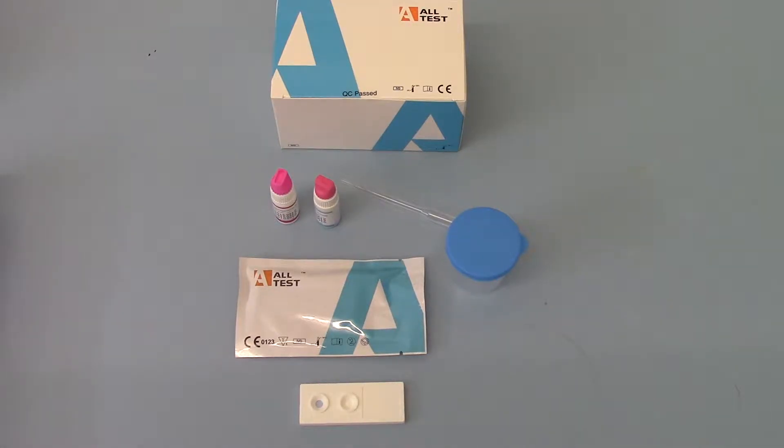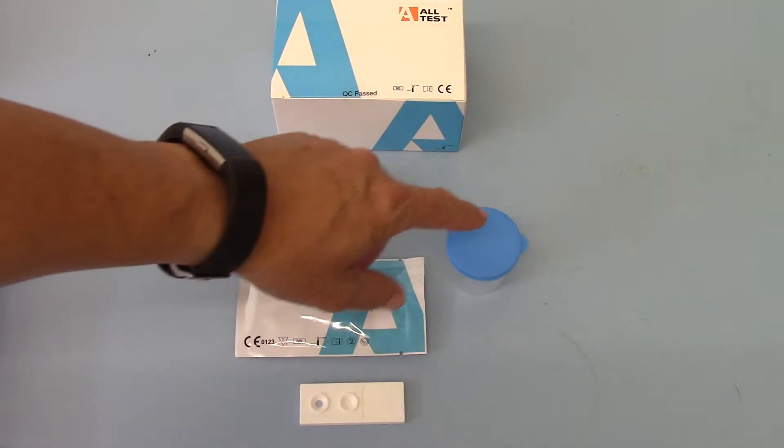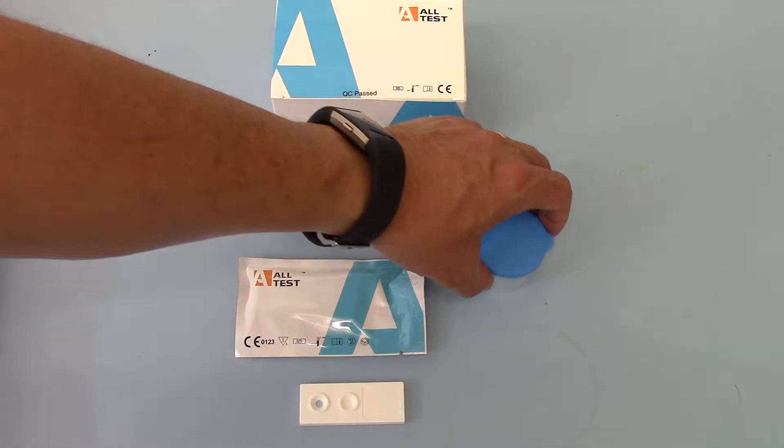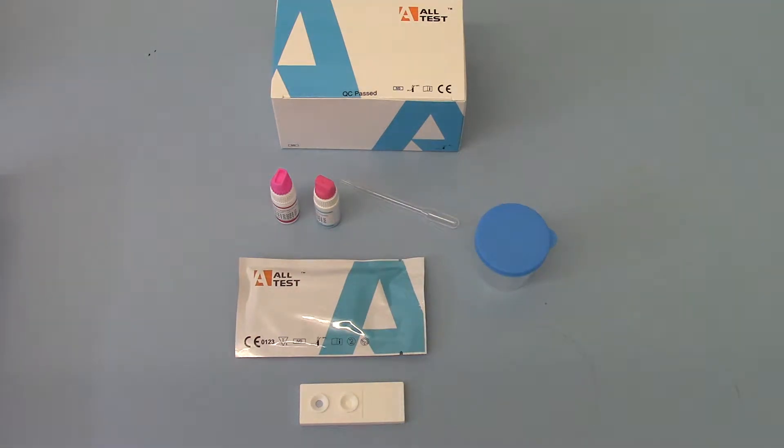So the procedure for running one of these tests is to masturbate into the pot here, replace the lid once the ejaculate is in the pot and leave to stand for between 15 and 20 minutes.